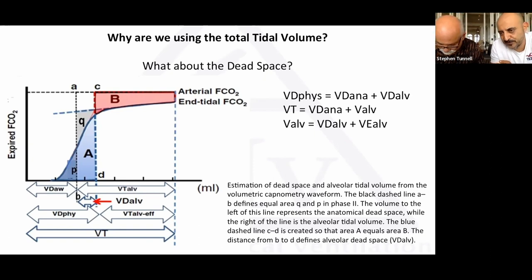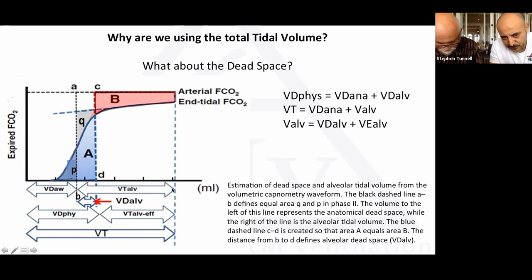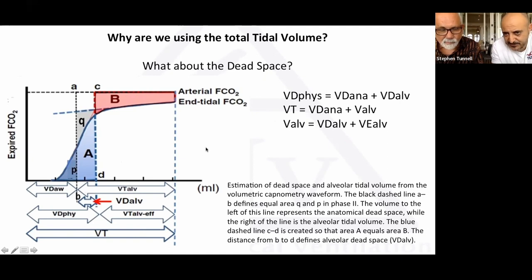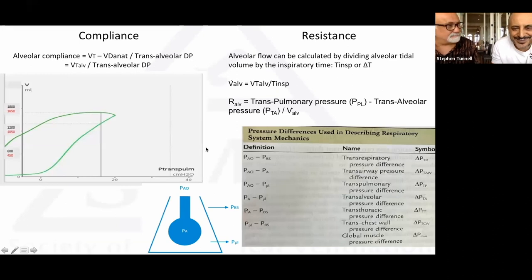We know there is a volume in the alveoli that may not be perfused — alveolar dead space from V/Q mismatch. But it's still volume distending the alveoli, so we wanted to include it. Physiologic dead space = anatomical + alveolar dead space. Total tidal volume = anatomical dead space + alveolar tidal volume. Alveolar tidal volume includes the effective (perfused) portion plus the alveolar dead space portion.